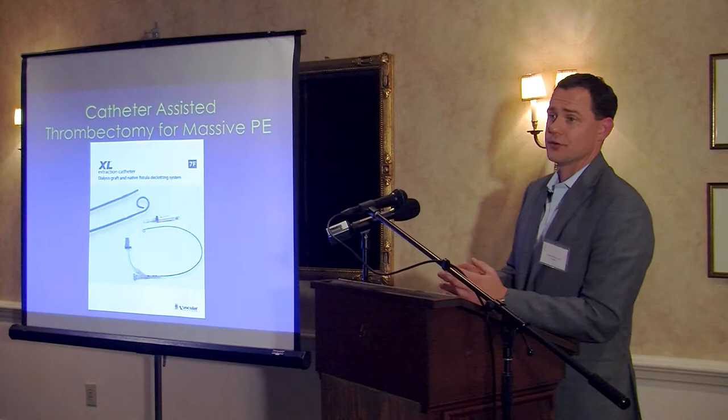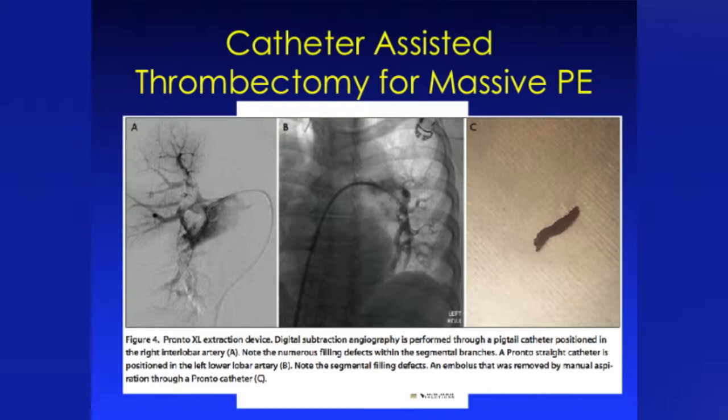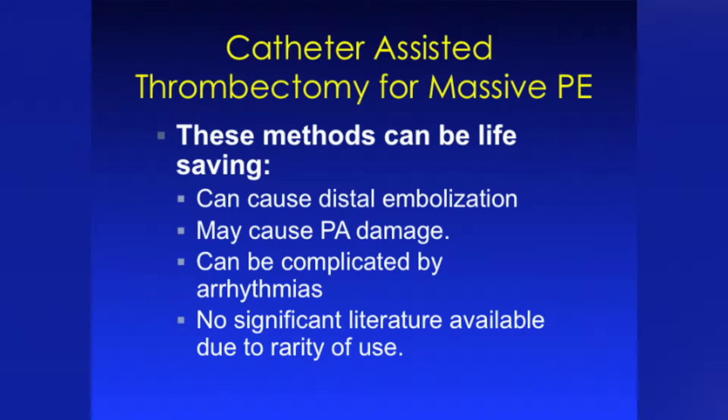Another type of catheter-assisted device for massive PE is a clot extraction catheter. You place it in the pulmonary artery and macerate or break up the clot — you can even aspirate it, though the clot retrieved is less impressive than with the Angiovac. These devices can be life-saving in an emergent situation when you don't have access to a cardiothoracic team. They basically cause distal embolization, opening a channel for blood flow into the lungs. However, they can be complicated by arrhythmias and pulmonary artery damage, and there is not a lot of good literature — mostly anecdotal studies.